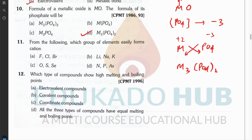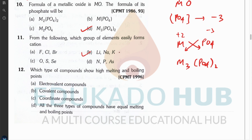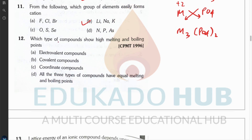Question eleven: which group of elements easily forms cations? The answer is alkali metals. They have one electron in the outer shell so it is very easy for them to form cations. They have very low ionization energies.